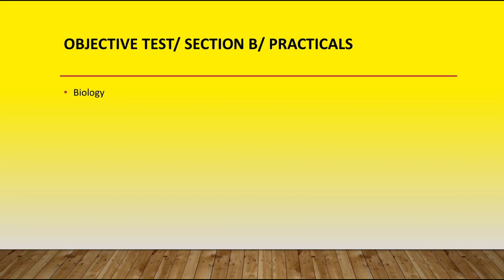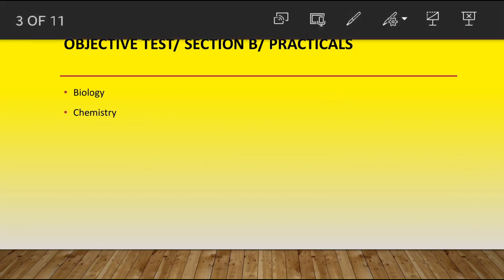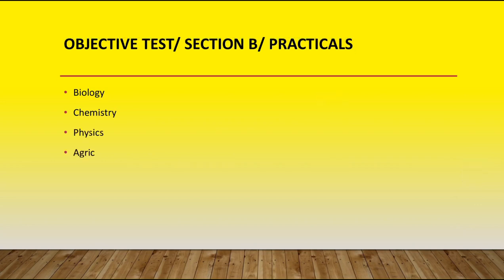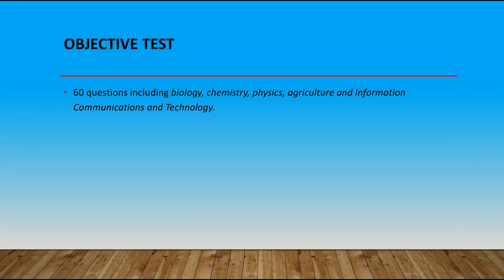With the objective test, section B, and the practicals, you always have biology, chemistry, physics, agricultural science, and information and communications technology. With the objective test, we have 60 questions including biology, chemistry, physics, agriculture, and ICT. The number of questions varies, but the section with the least number of questions is information and communications technology.